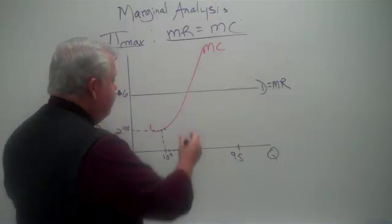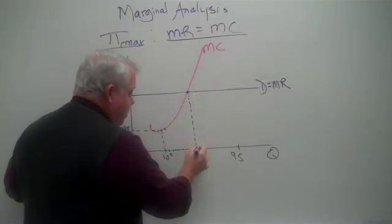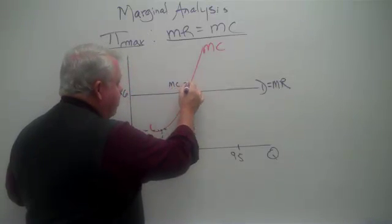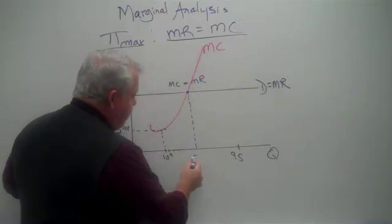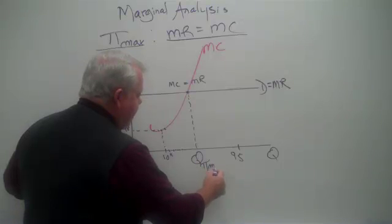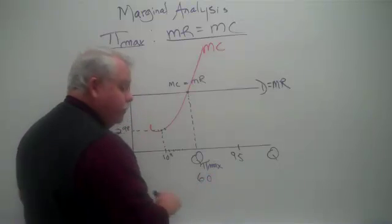And in fact, we'll find that you want to continue to produce all the way up to this point where marginal cost equals marginal revenue will tell us the profit maximizing level of output. And for grins, let's say that's 60 units.